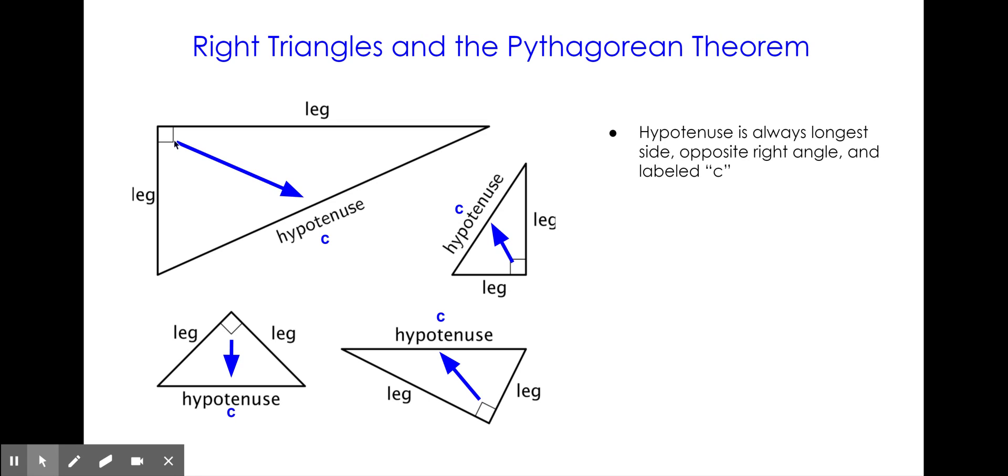When using the Pythagorean Theorem, we label the hypotenuse side C. The legs are adjacent to the right angle, or on either side of it, and we label those A and B.